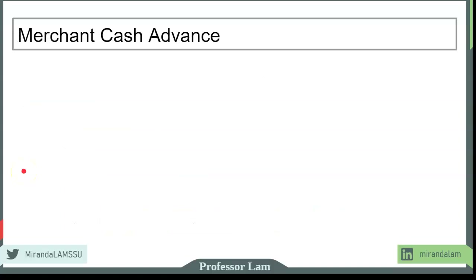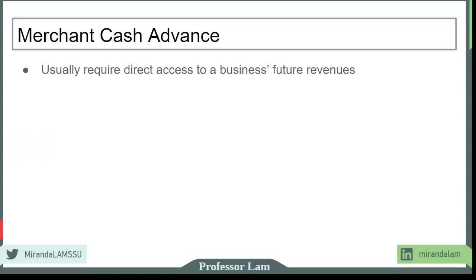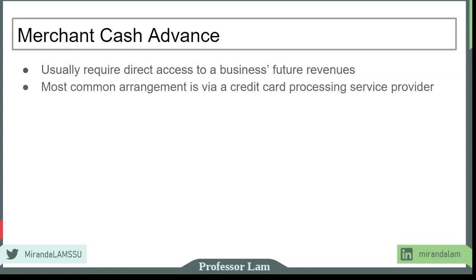Another form of financing is called merchant cash advance, which is also technically not a loan. The way a merchant cash advance works is that you receive cash, but the way the company collects repayment is not contingent on you making payments — most of the time they require direct access to business revenue. The most common arrangement is through credit card processing: you obtain a merchant cash advance and are required to change your credit card processing provider to one the MCA company uses. Your credit card revenue is then split between you and the MCA company.